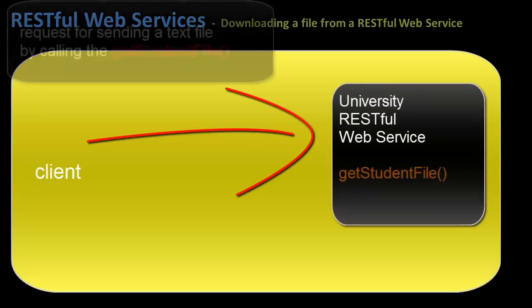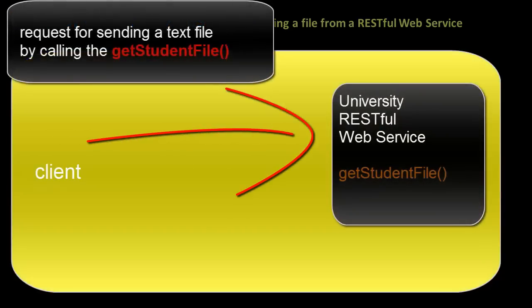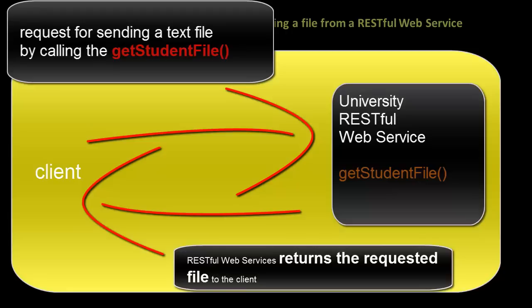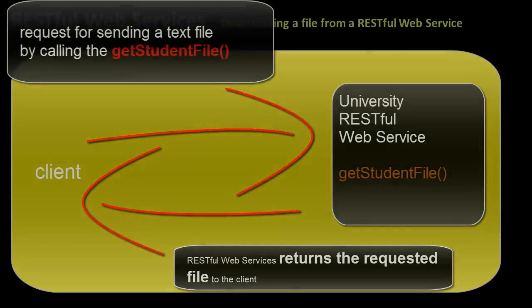In simple words, the client would send a request to the get student file function in the university RESTful web service, and then this function would send a file as a response to the client. The client would be popped up with an option to save or open the file, so the client can either save the file to their local disk or just open it.